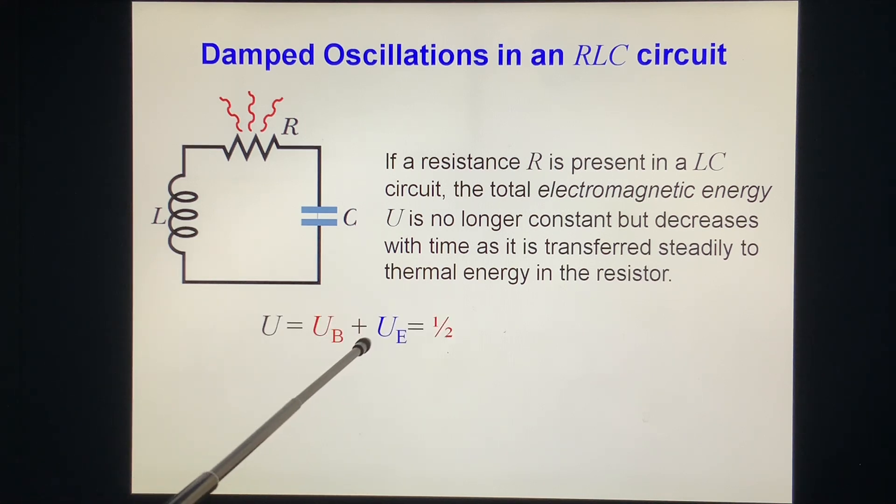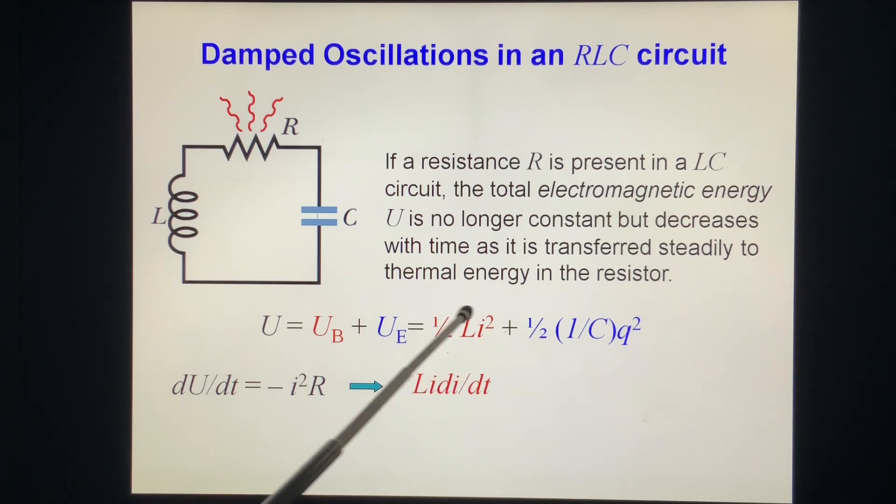So total U, they are not constant. We say dU/dt. The energy reduced should be consumed in R, it's I squared R. This is a minus number because they reduce. We put this one inside and do the derivative. 2 times 1/2 cancel, L I dI/dt, 2 times 1/2 cancel, q over C times dq/dt equal to minus I squared R.